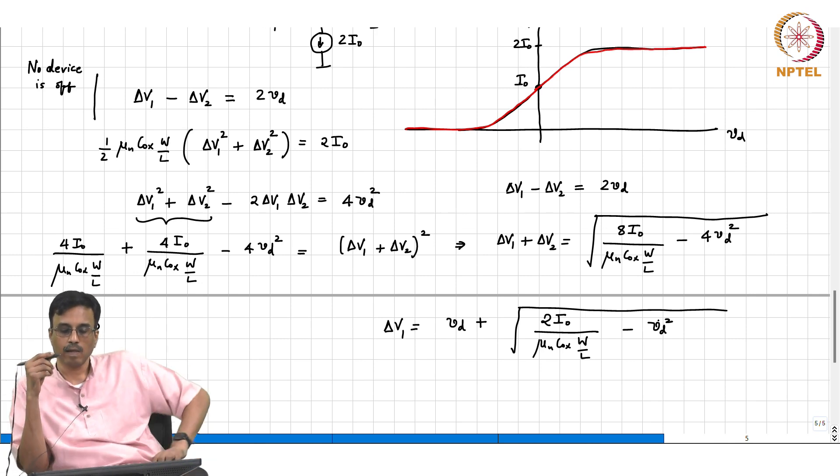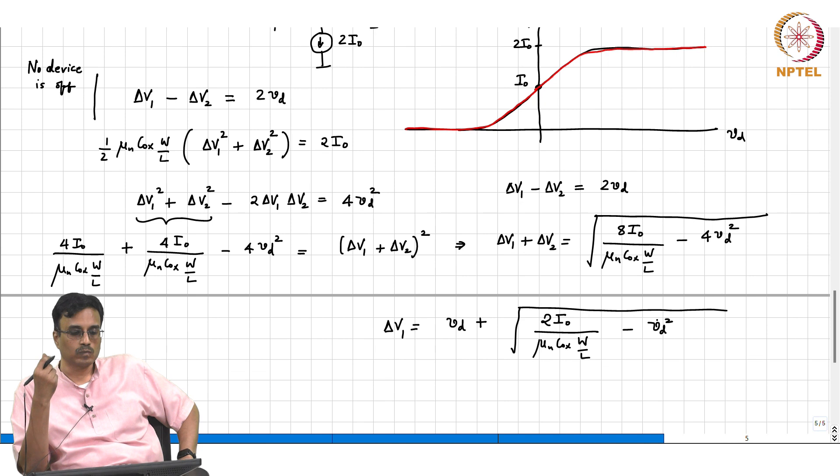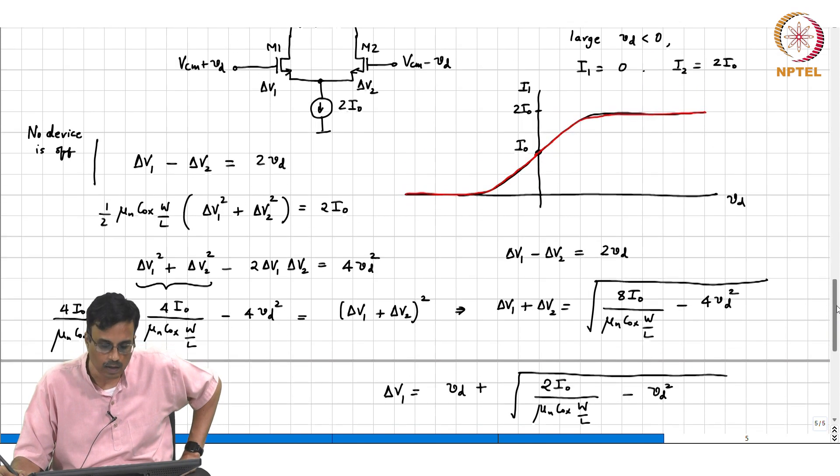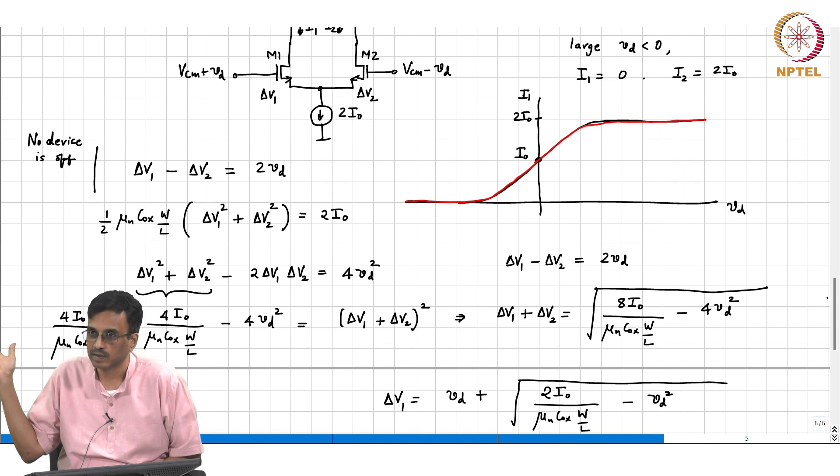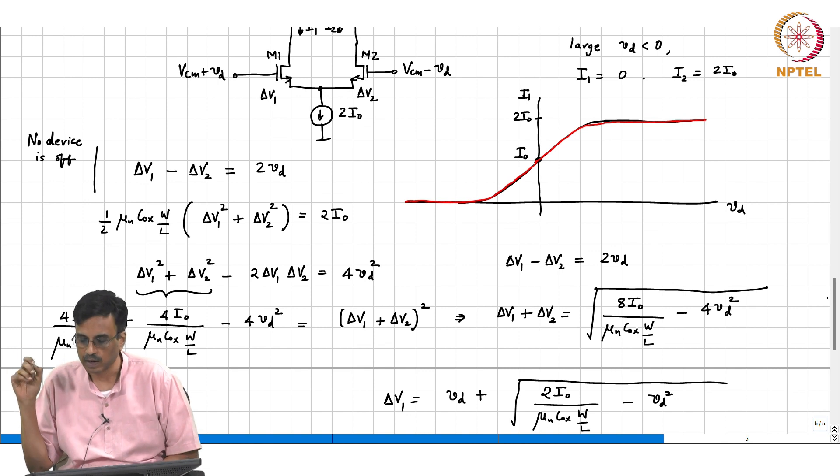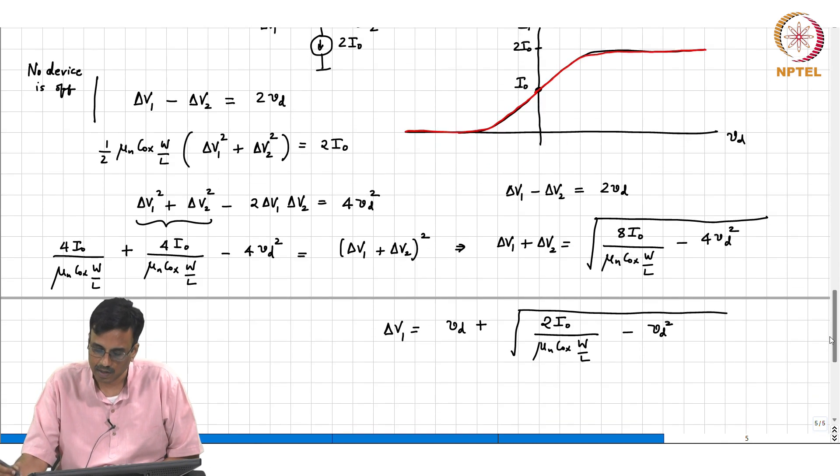Sanity check: Vd is 0, what should we expect the overdrive to be? What is the equation telling us? Which must equal what? Do you agree? Is our formula okay? Seems to be okay.